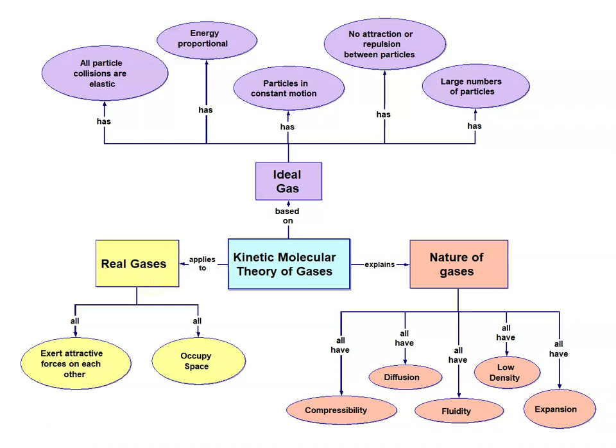The main difference between an ideal gas and a real gas is that their particles do occupy space, and they do exert attractive and repulsive forces on one another. In general, the nature of gases: they're compressible, they diffuse and effuse, they're fluid, they're low density, and they expand to fill the container that they're in.